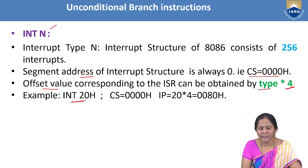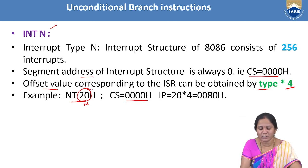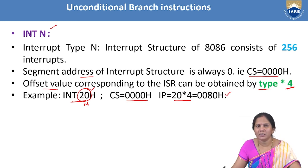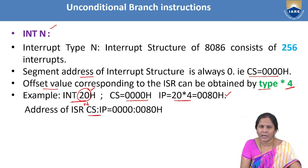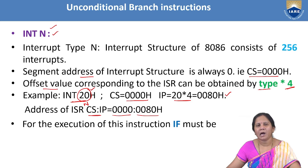For example, if we consider INT 20H, the value 20H represents the type number N. In the interrupt vector table, the segment address will be 000H, whereas the offset address will be type number × 4. Here, 20H × 4 = 0080H. So the ISR address will have CS = 0000H and IP = 0080H. When this INT N instruction is executed, the IF flag (interrupt flag) in the flag register must be set — only then will this instruction be executed.